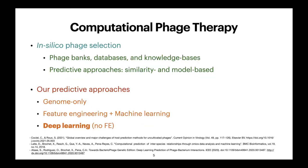There are computational approaches not necessarily based on machine learning — sometimes solutions go through phage banks, databases, and knowledge bases for selection. In recent years there are many predictive approaches that try to identify the most active phage against a given bacterium. Most approaches are based on similarity, but increasingly on predictive models. Our own predictive approaches are intended to work only on genomes.